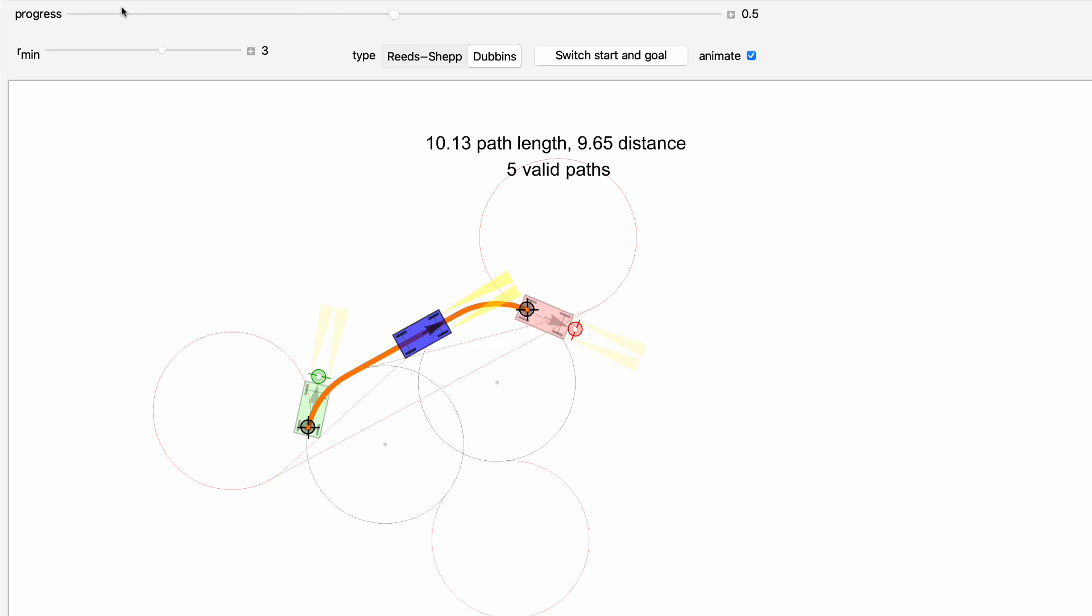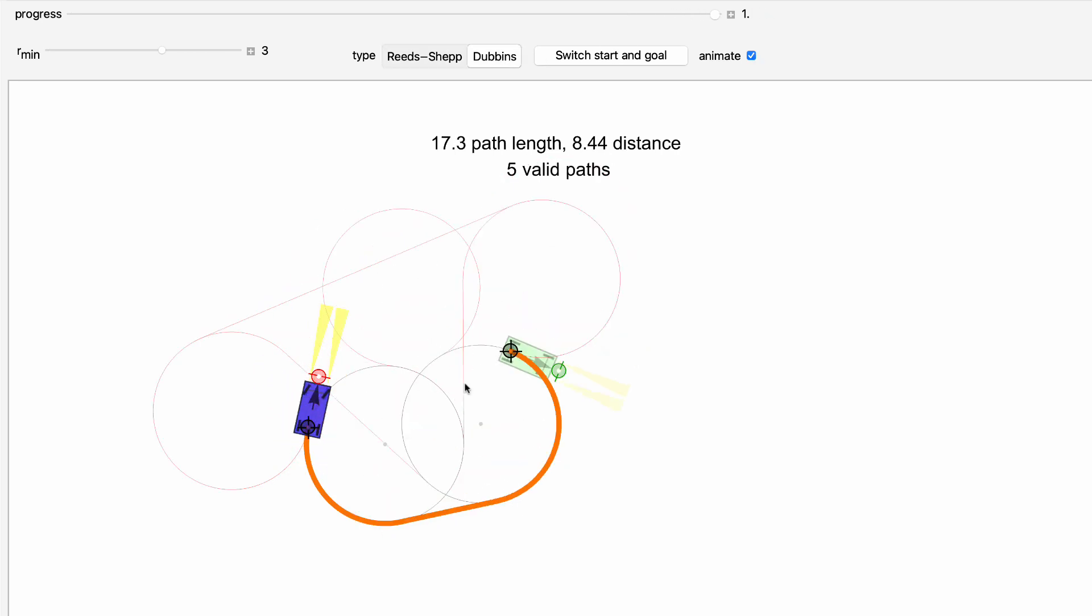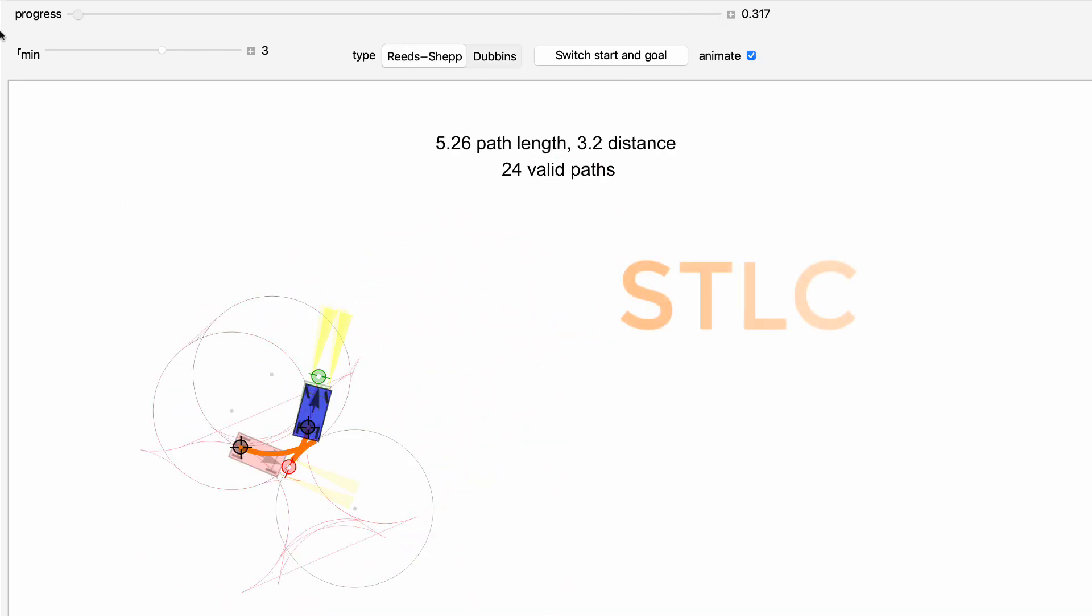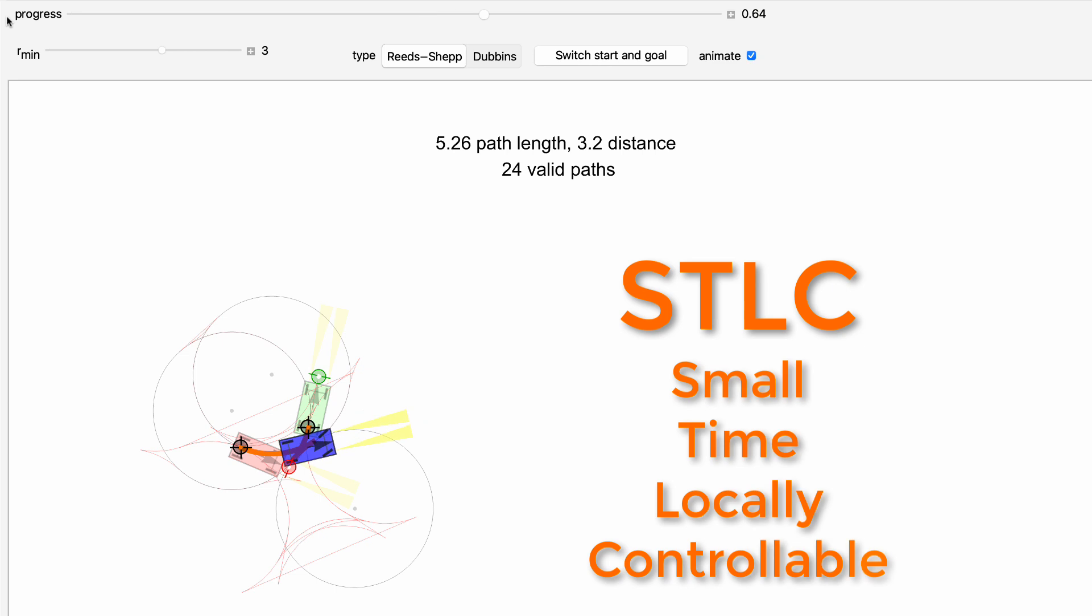It is also easy to concatenate Reed-Shep paths together. These properties make it easy to use the Reed-Shep path for motion planning. We call this system small-time, locally controllable.